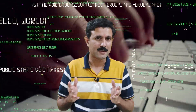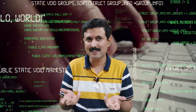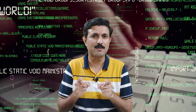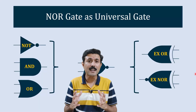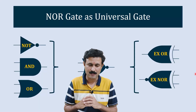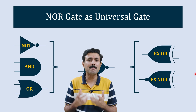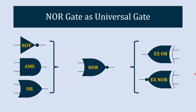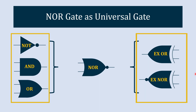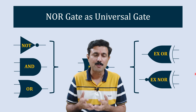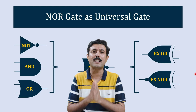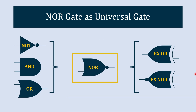NOR gate is a universal gate, but how can we say that? That is what we are going to learn in this video. We are going to follow a simple process. A universal gate means a gate which can be used to construct any gate or any logical circuit — that is called a universal gate. We are going to create all types of gates using NOR gate.